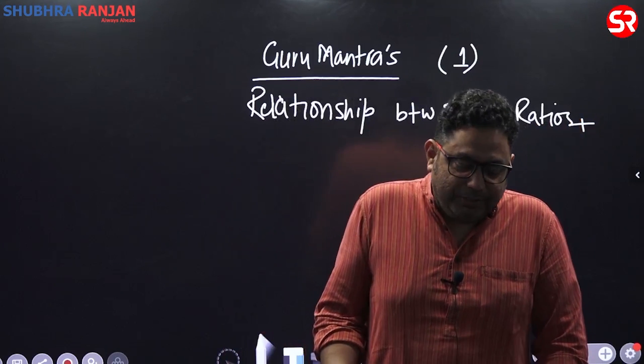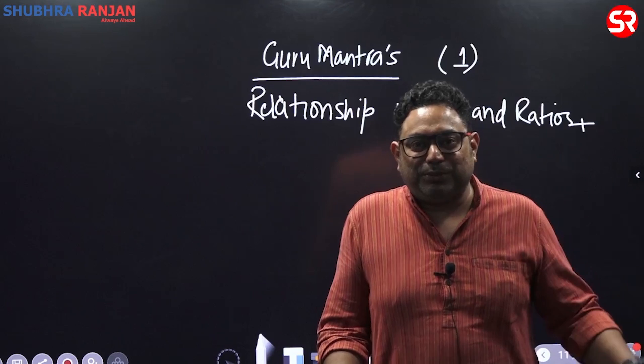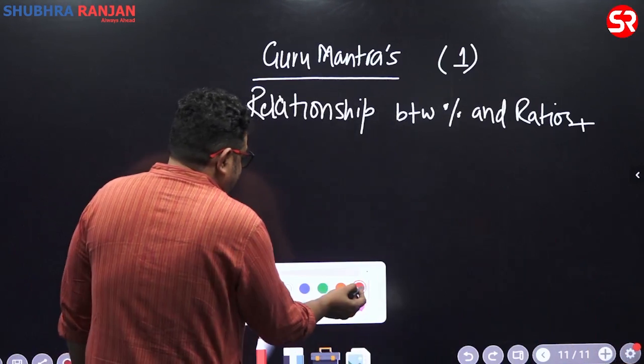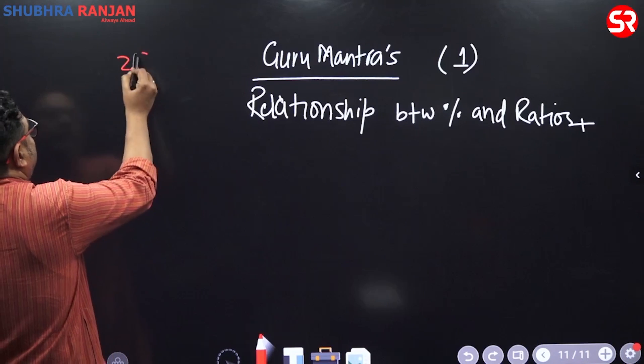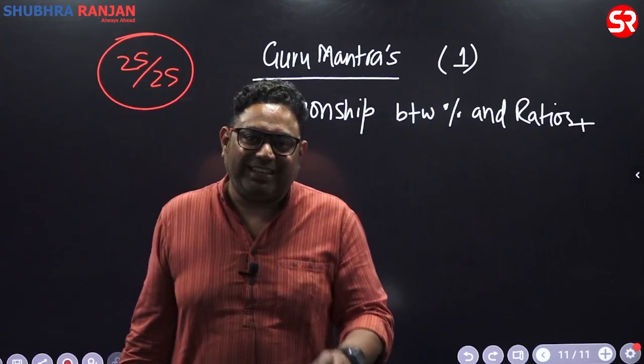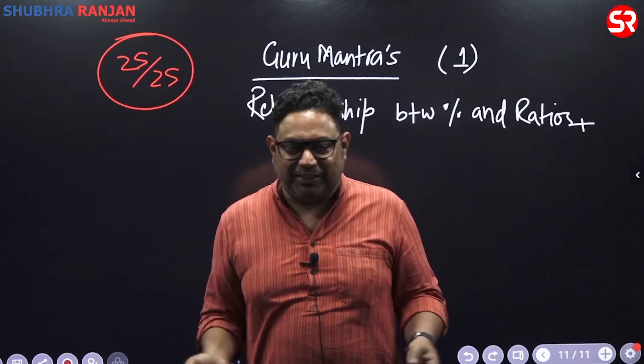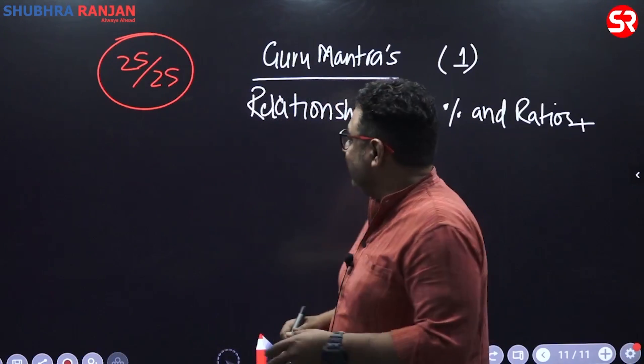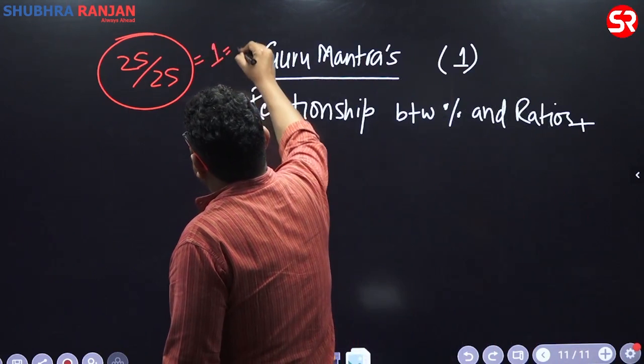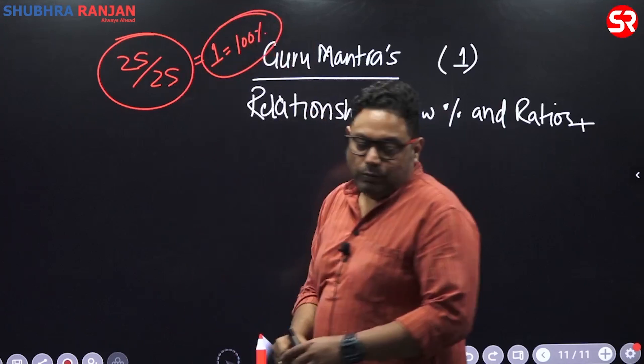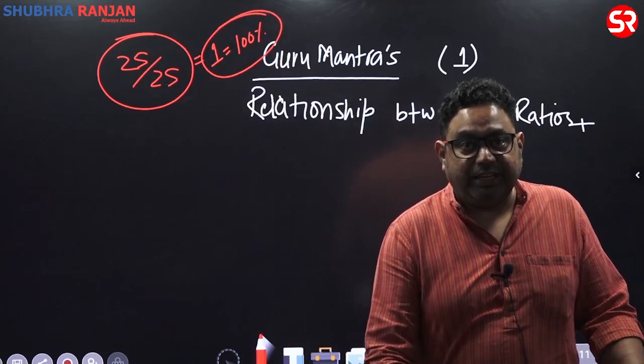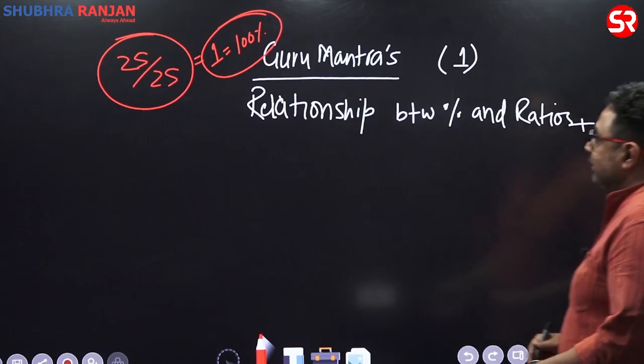Listen, since our childhood, we have been encouraged to score full out of full. And I remember most of you would have this experience of scoring full marks. So teacher used to write 25 out of 25. It was a ratio written, and you realize you got 100% marks. So without knowing, you realize 25 by 25 is equivalent to 1, and 1 is equivalent to 100%.